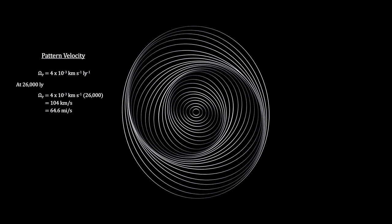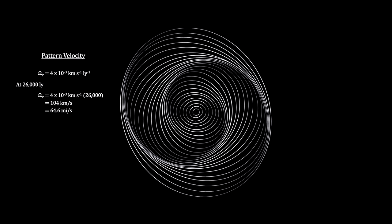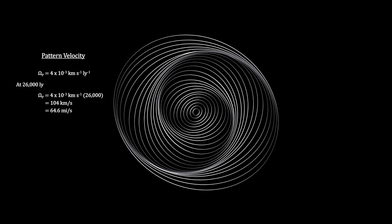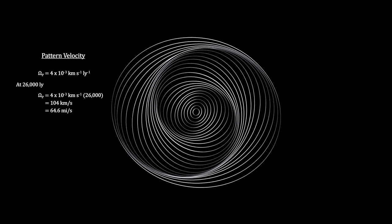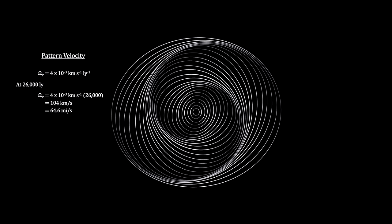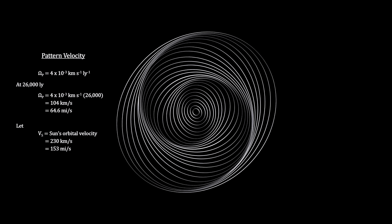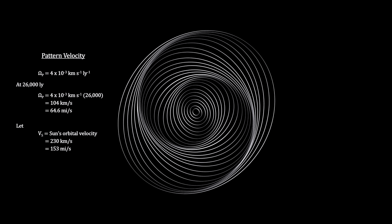For our star, 26,000 light years from the center of the Milky Way, we have a pattern velocity for the Orion Spur at around 100 kilometers per second, or 65 miles per second. Our star's velocity around the center is more than twice that much. I expect we'll be leaving the Orion Spur in a few million years.